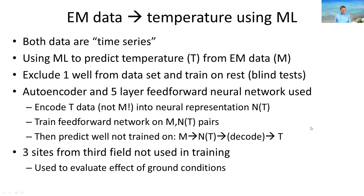It's important not to encode our electromagnetic data because it contains a mixture of geological information and temperature information, and we don't know which is which — the goal of the network is to separate them. We also use three sites from a third field, which illustrates the importance of having uniform geology in our datasets for this to work well.